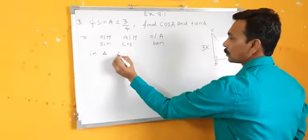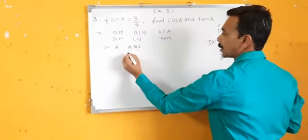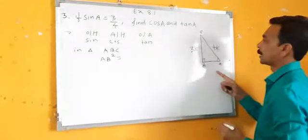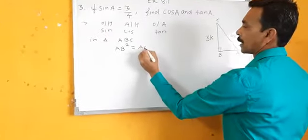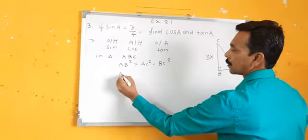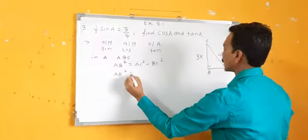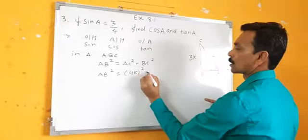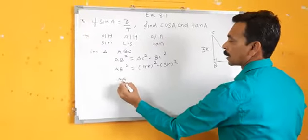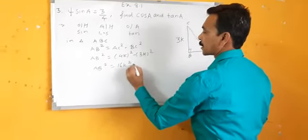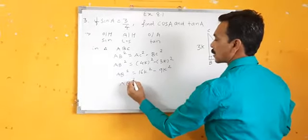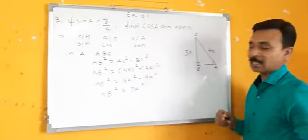In triangle ABC, I have to find AB. So AB square is equal to AC square minus BC square. AB square is equal to 4K whole square minus 3K whole square. AB square is equal to 16K square minus 9K square. AB square is equal to 7K square.